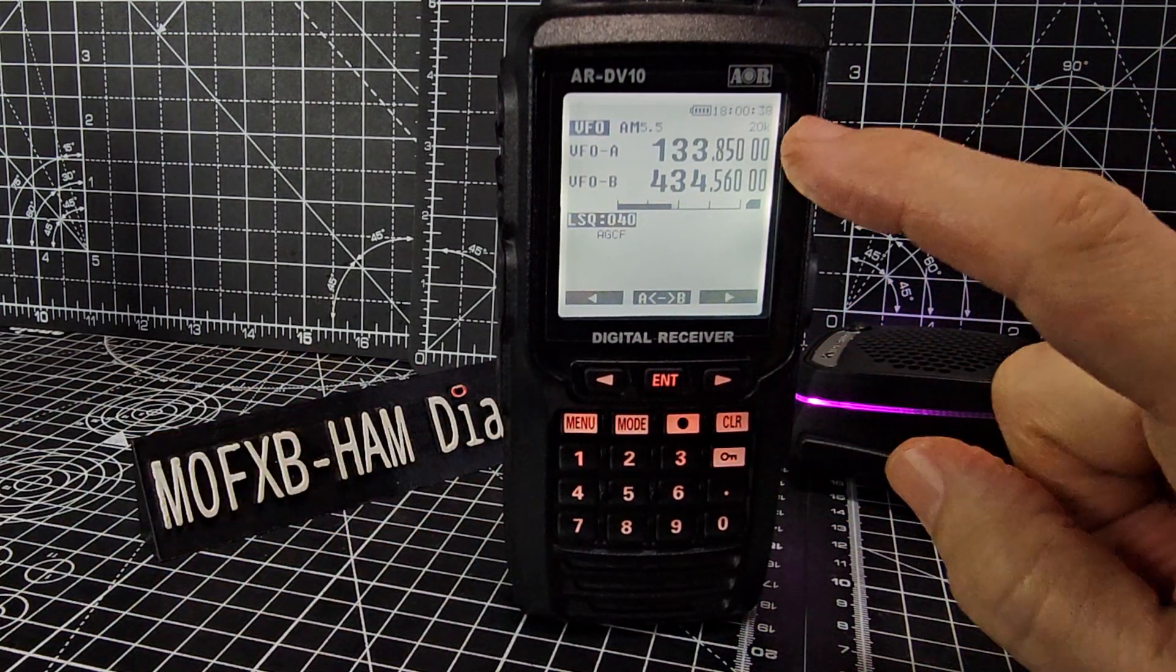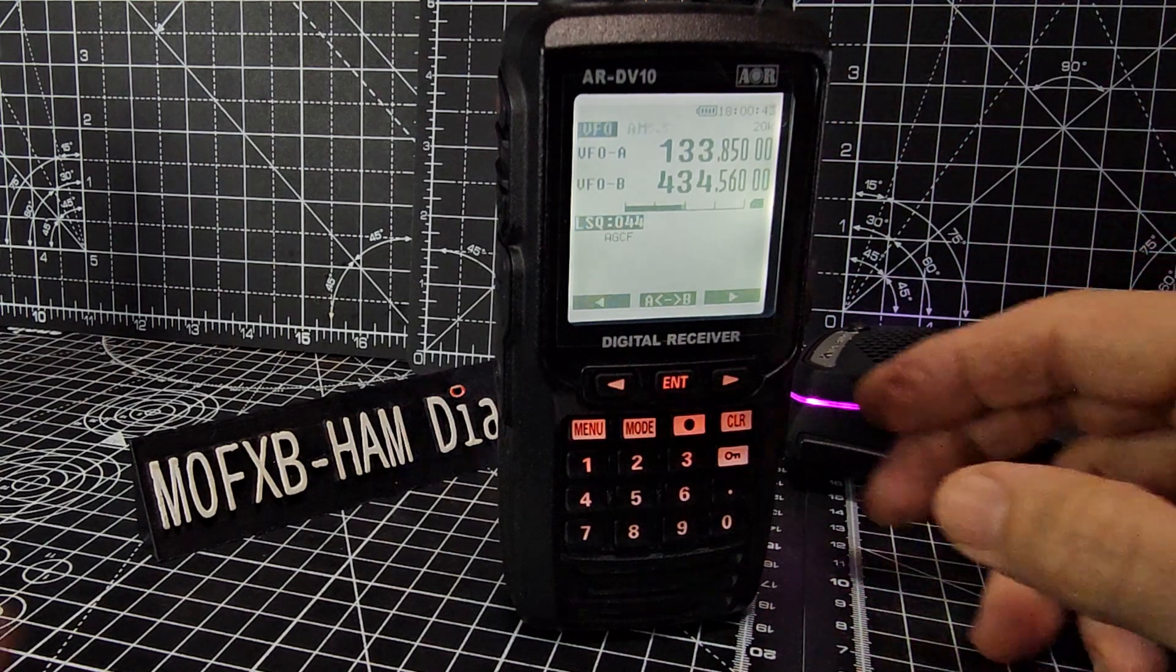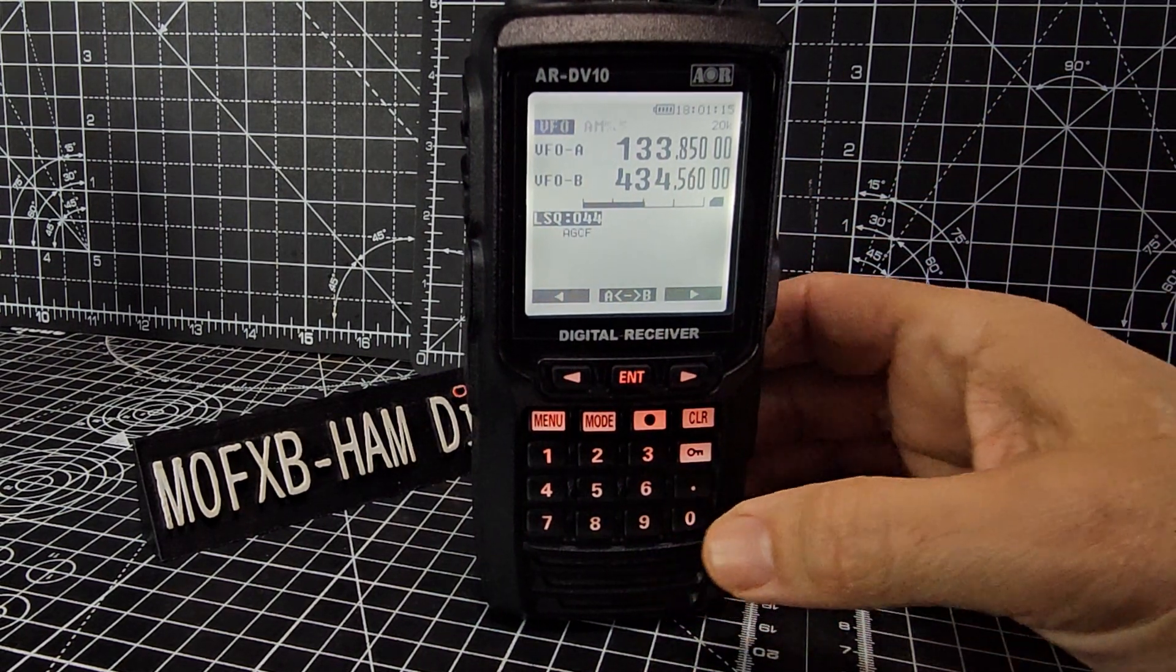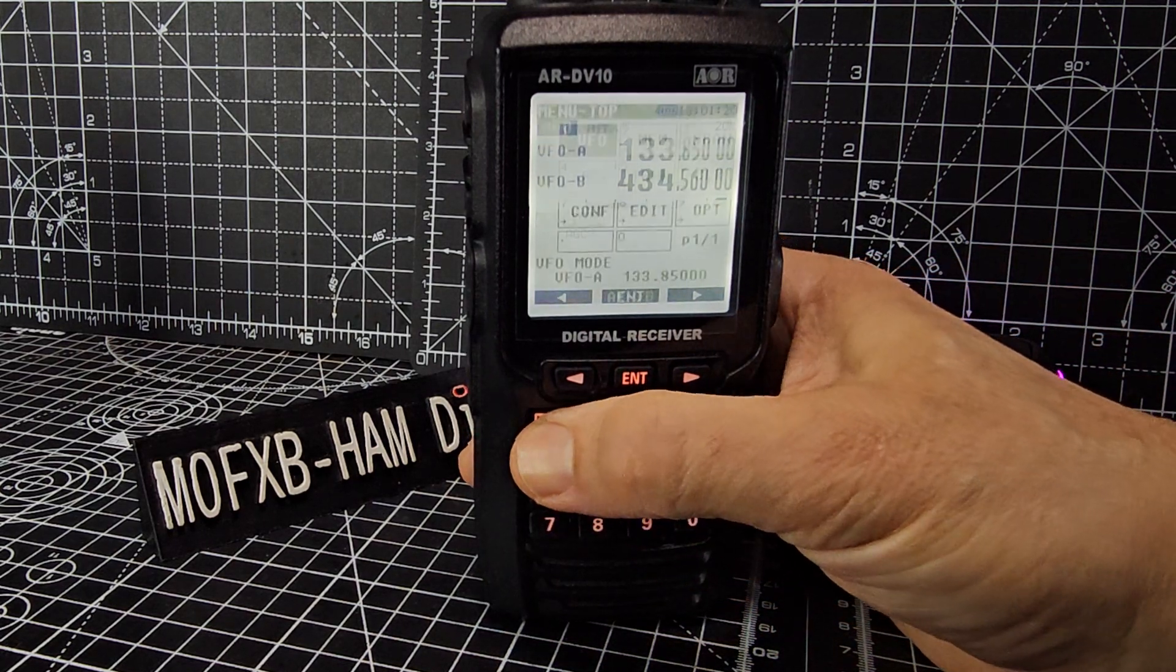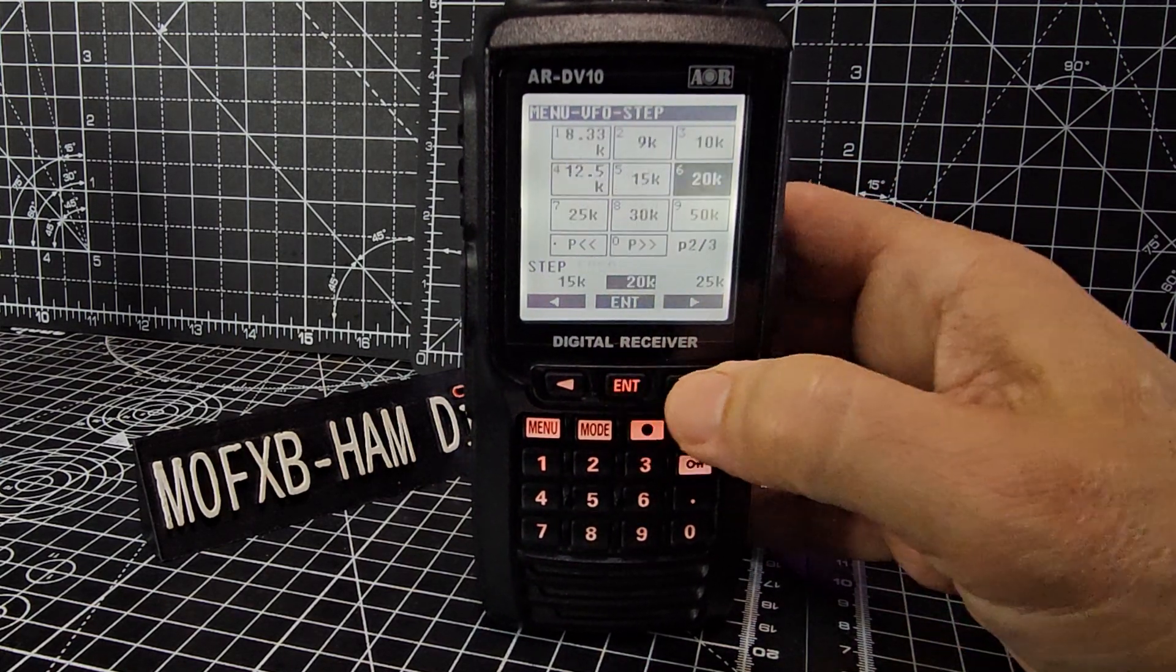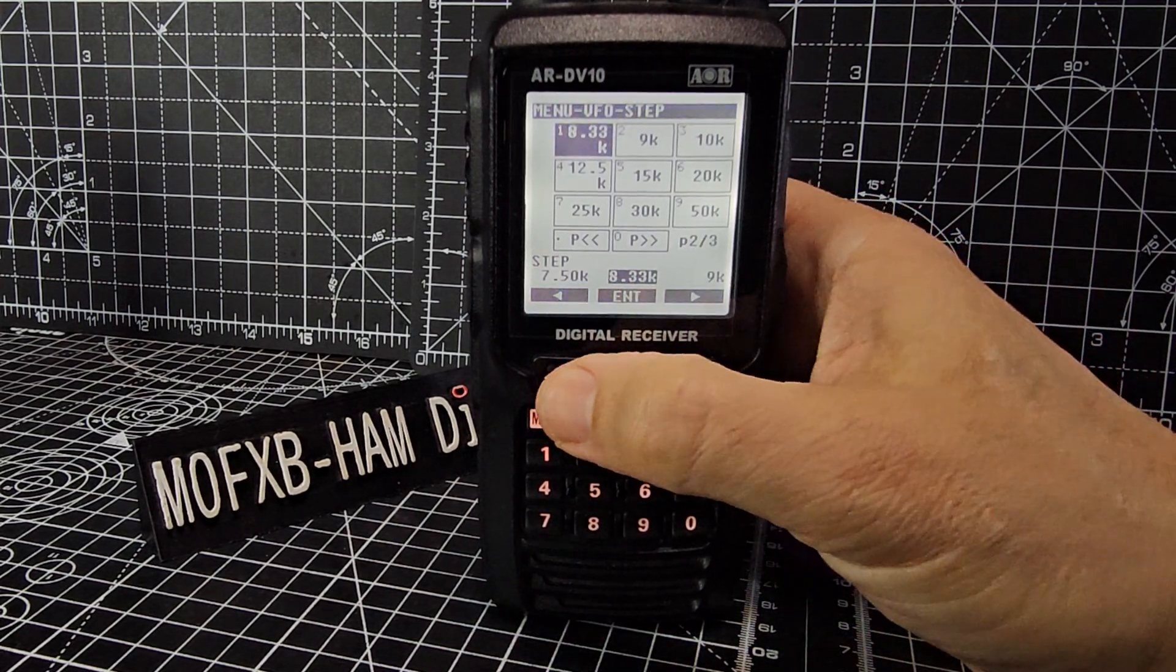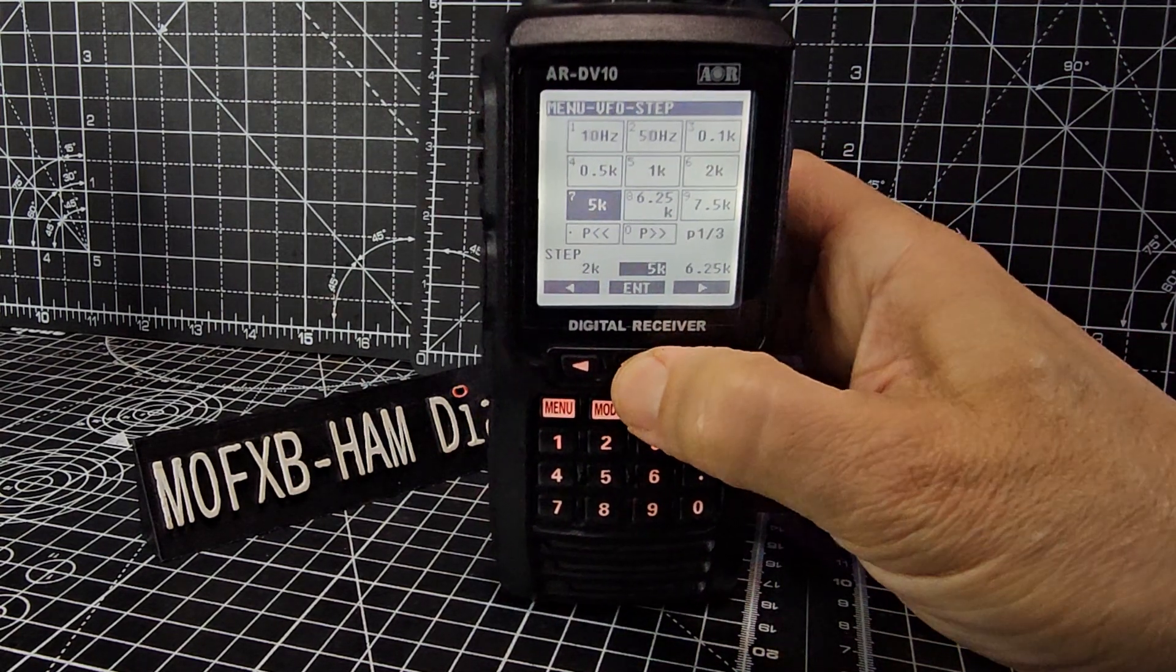So the next thing is we're going to set our step, because at the moment if we change frequency it's going to step by 20 kilohertz but we don't want that. We want it to be, on airband, I tend to set it to 5 to be honest, but you've got the 8.33. So we'll go menu, enter VFO again, go to step, enter, and you have got 8.33 there at the top for those that want that. I tend to set, I'm pretty sure it's 5 I tend to set. Now there's 5 kilohertz there, enter.